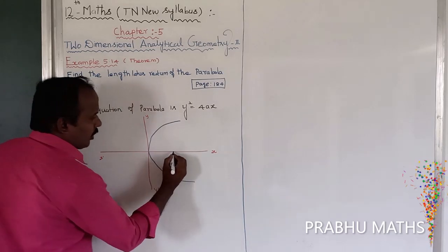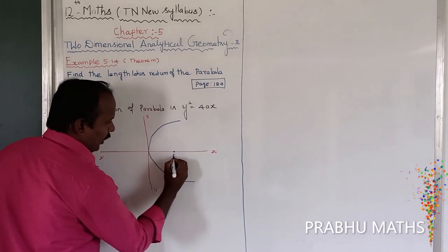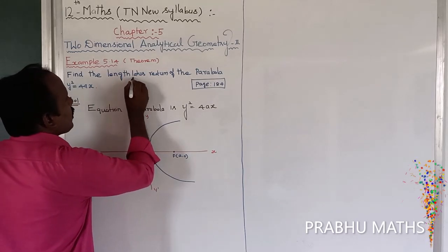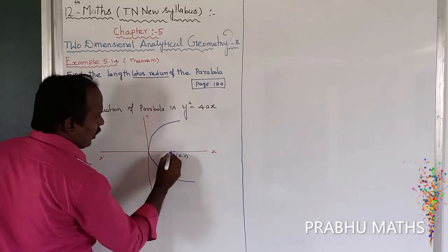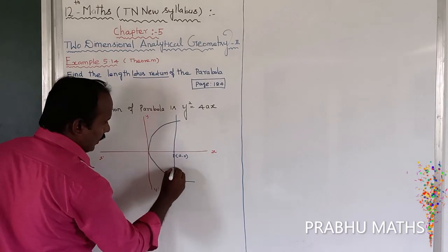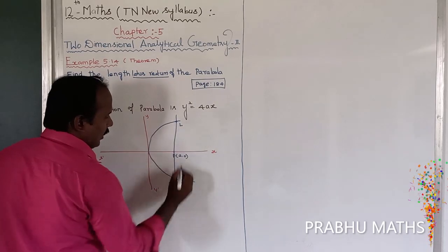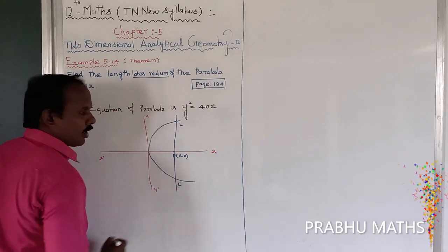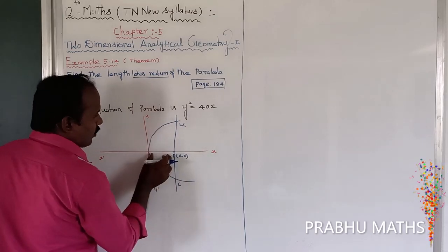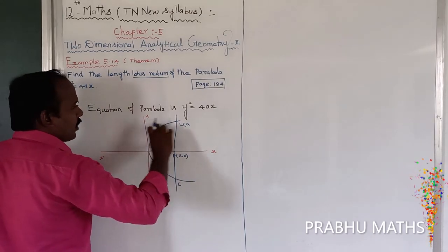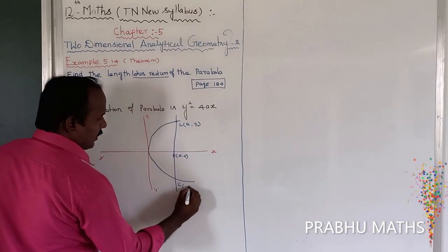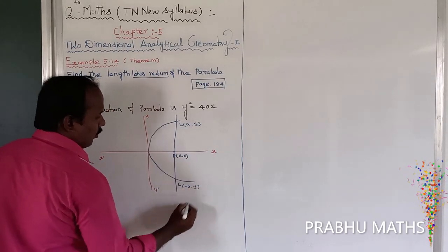The focus point is at (a, 0). The latus rectum passes through the focus — that line is called the latus rectum. The upper endpoint is L and the lower endpoint is L'. The x-distance is a, and the y-coordinate is considered y1. So the lower point is (a, -y1).